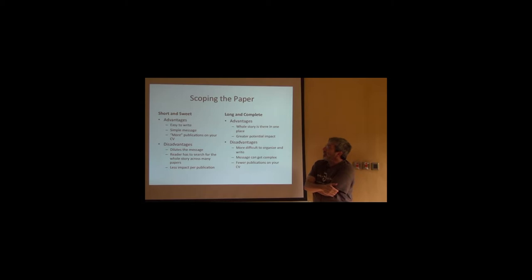We'll talk about that again in the disadvantages as well. The advantages of a long and complete paper is that the whole story is there in one place. And so your reader doesn't have to find the other paper or the other three papers that give the rest of that story. And thanks to that, you're likely to have a greater impact. So, for example, many times our impact as scientists is measured by how frequently other scientists cite our papers. And if you have a lot of papers, each of which tells a quarter of a story, it's hard for people to find all of them and cite all of them. But if you have fewer papers that tell more of the story, then they tend to get cited more.